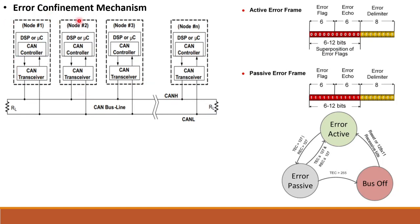Here we have many nodes connected in a single CAN network. For example, node 1 is sending a CAN data frame, and during the transmission the frame was corrupted due to a CRC error, form error, acknowledgement error, bit error, or stuff error. These errors were already discussed in the previous session. Due to one of these errors, the frame is corrupted.